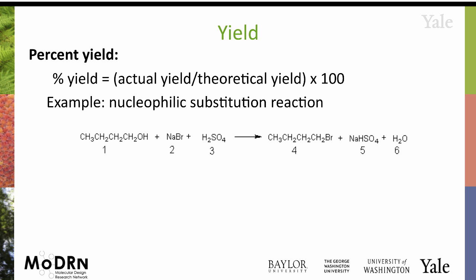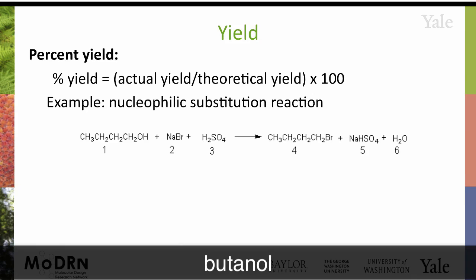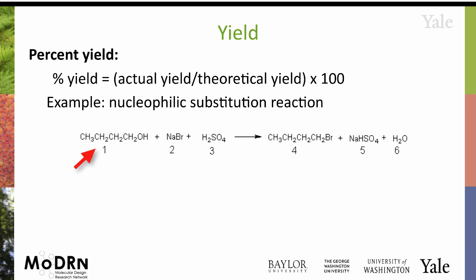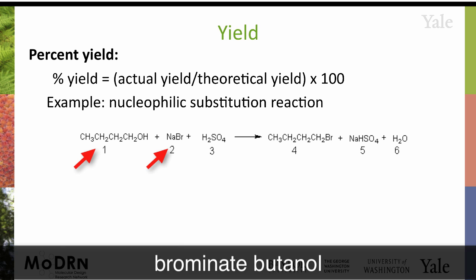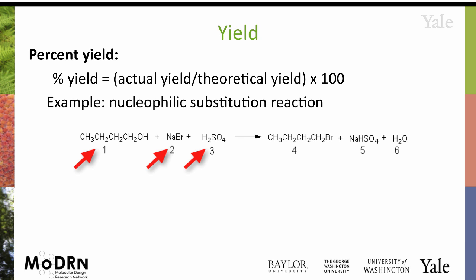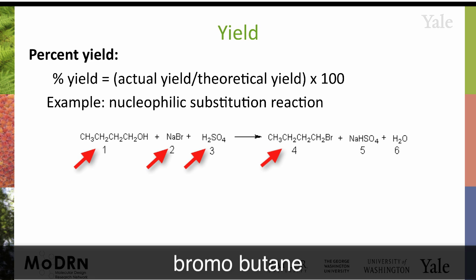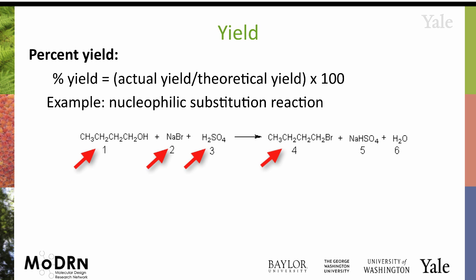Let's take an example. You have butanol, you want to brominate butanol, you have NBr, sulfuric acid, you produce your brominated bromobutane, and you have your byproducts.